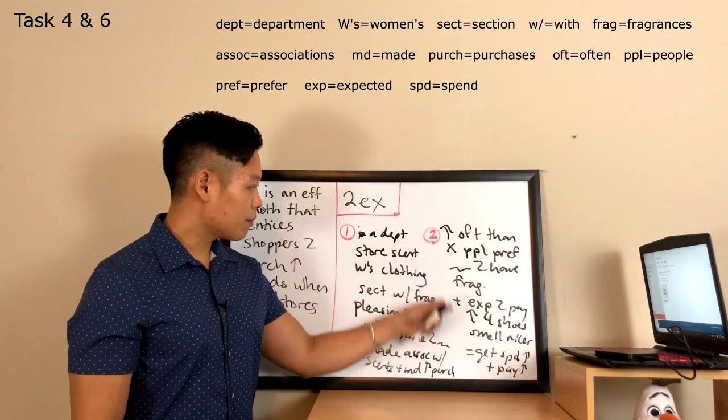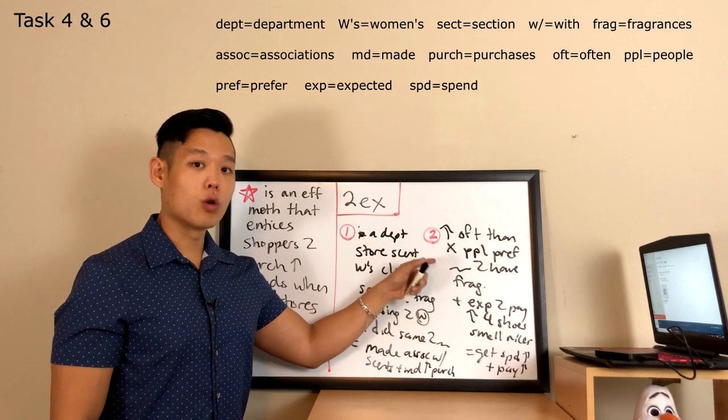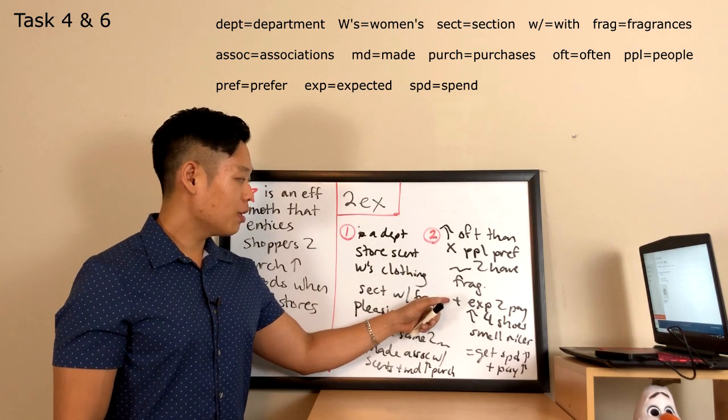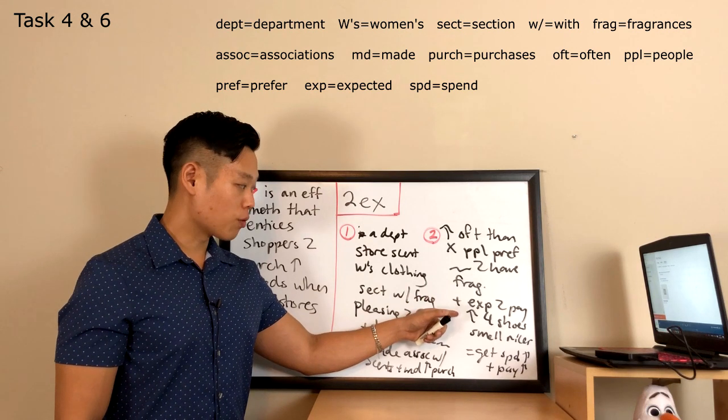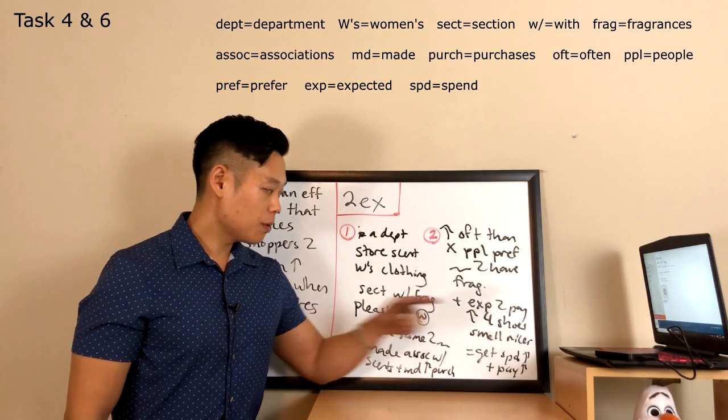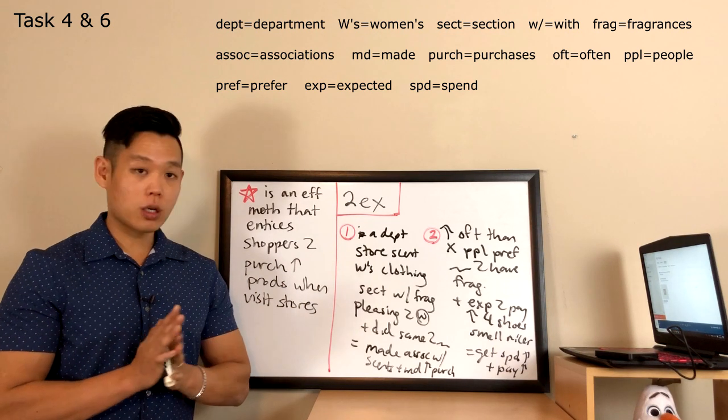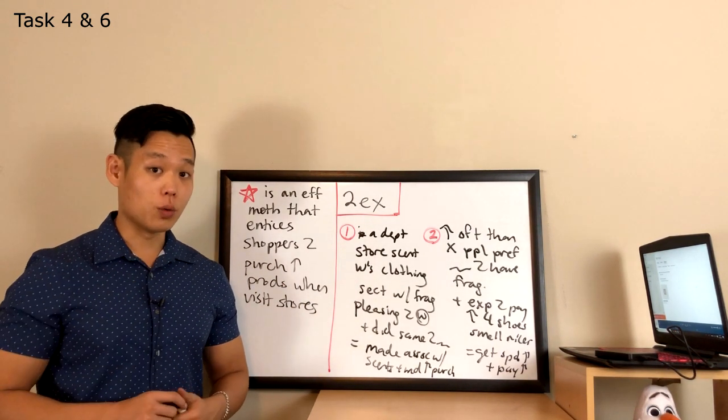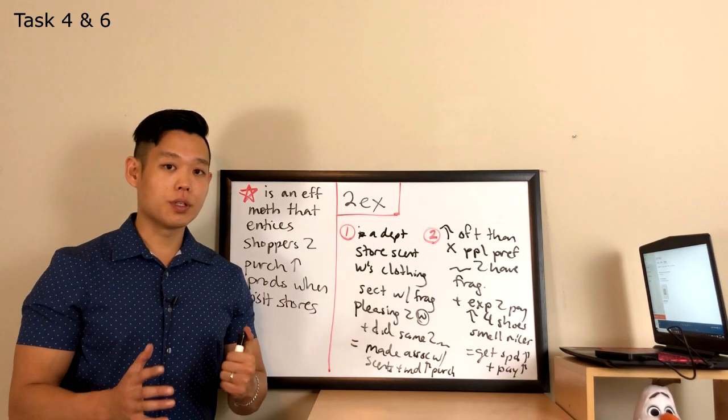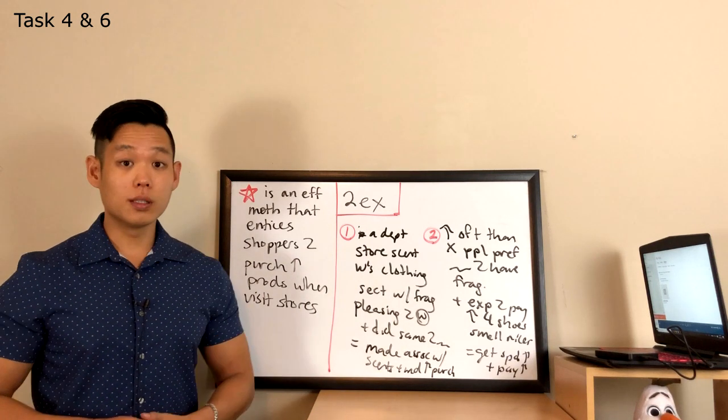Now the second example says, more often than not, people prefer running shoes to have some kind of fragrance and expected to pay more for the shoes that smell nicer. So, get people to spend more and pay more. That's what the professor talked about, and those are the words that I decided to actually take notes on. Hopefully, you understand by now that it's only about 70% of what the professor said. So, let's listen to my sample response.